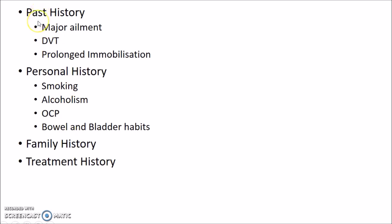Coming to past history, any history of major ailment or deep vein thrombosis should be taken. If the patient had a past history of pain and swelling in the calf associated with fever, it indicates deep vein thrombosis. Any history of prolonged immobilization or pregnancy should be taken, because these are risk factors for developing varicose veins.